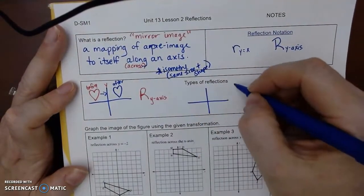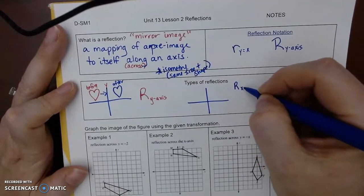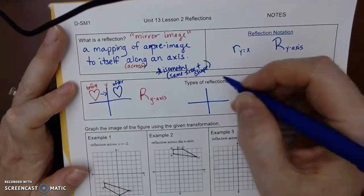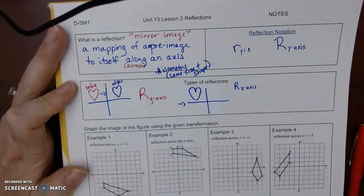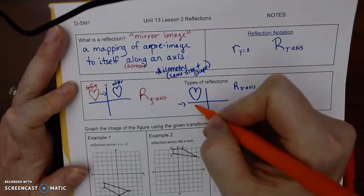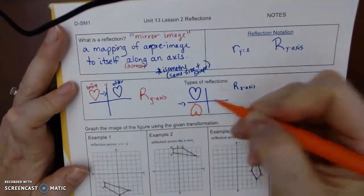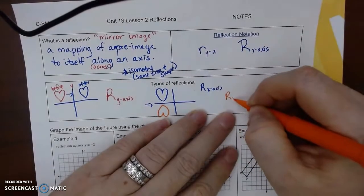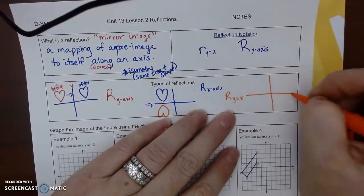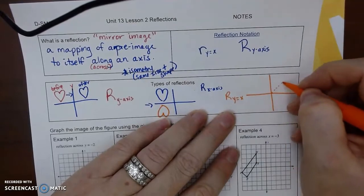So I'll take the same heart, and if we do it over the x-axis, we fold it down and it's going to be right here. And then the last typical one that you'll see is over the line y equals x. So y equals x is actually the diagonal line at 45 degrees going through quadrants one and three.